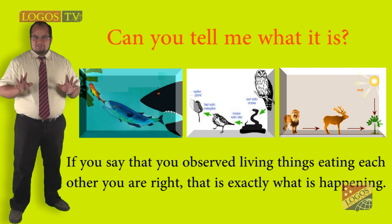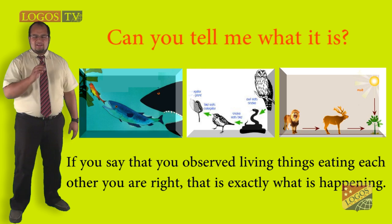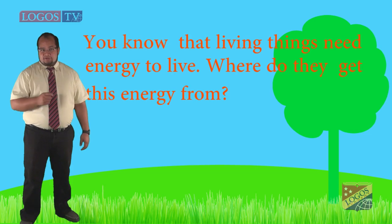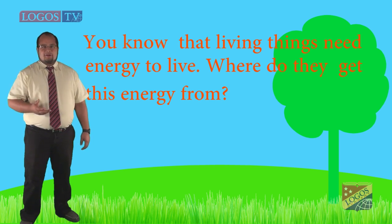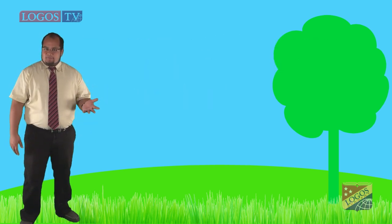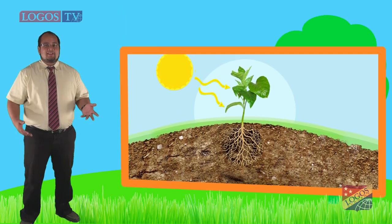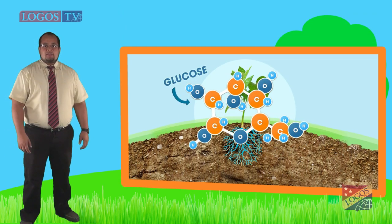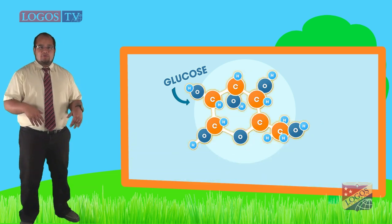If you say that you observe living things eating each other, you are just fine. That is exactly what is happening. You know that living things need energy to live. Where do they get this energy from? Plants need sunlight, water, and nutrients to survive. They make their own food with the photosynthesis process. That is how they grow.